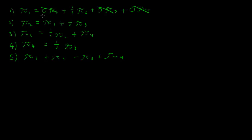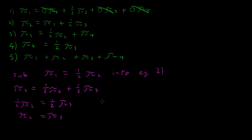So we've got pi 1 is equal to half pi 2. Let's sub that into equation 2. That gives us pi 2 is equal to half pi 2, which I've subbed in for pi 1, plus half pi 3. Let's subtract half pi 2 from both sides. So half pi 2 is now equal to half pi 3. And therefore, pi 2 is equal to pi 3. Great stuff!